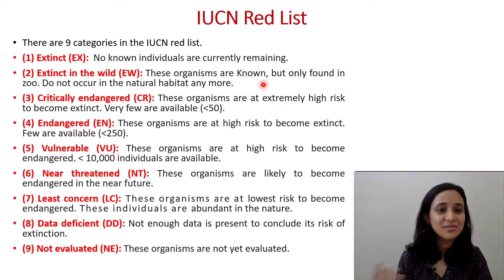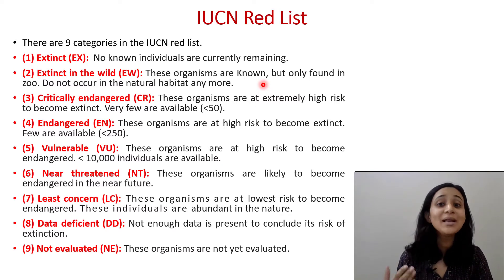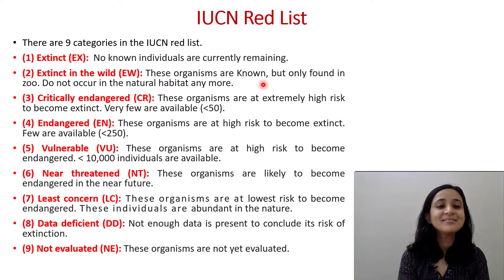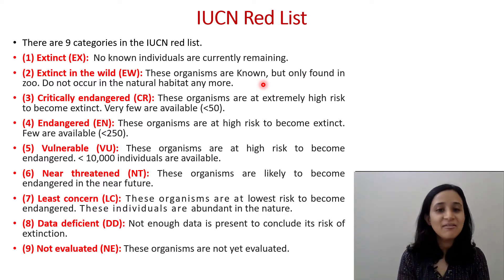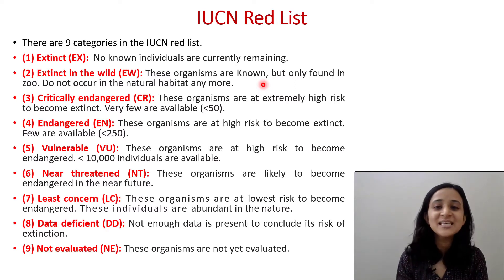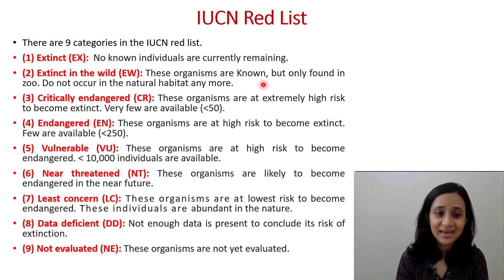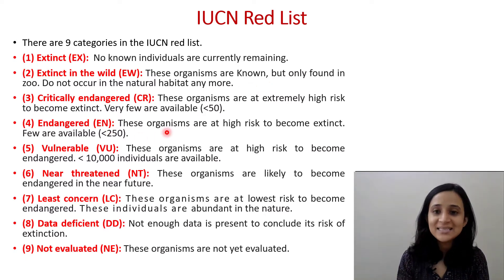Very few organisms are found only in zoos; other than the zoo, you will not find these animals in nature. The third category is Critically Endangered (CR) — these organisms are at extremely high risk of becoming extinct, with fewer than 50 individuals remaining. The fourth is Endangered (EN) — these organisms are at high risk of becoming extinct, with fewer than 250 individuals available.